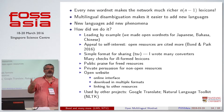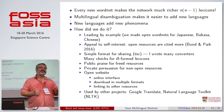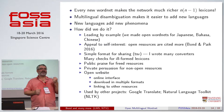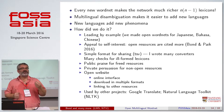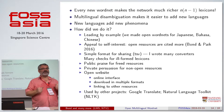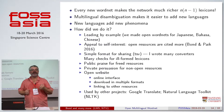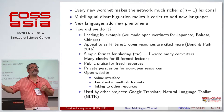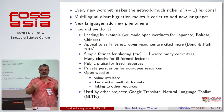Every new wordnet we add makes the network that much richer. Just in bilingual lexicons, it's proportional to the square. It also makes it easier to add new languages — if we already have Croatian, it's easier to add Serbian; if we have Indonesian, it's easier to add Minangkabau. Different languages have different phenomena: English doesn't have classifiers, whereas Chinese, Malay, and Japanese all do. English doesn't care very much about resultative states of verbs, but Czech and the Slavic languages do. So as we add more and more languages, we learn more and more about language.